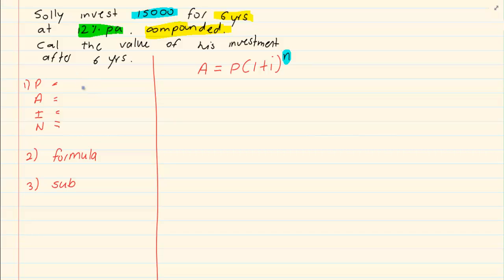P is 15,000. Our A we don't have. I is 12% which I like to write as a fraction, and N is 6 years.